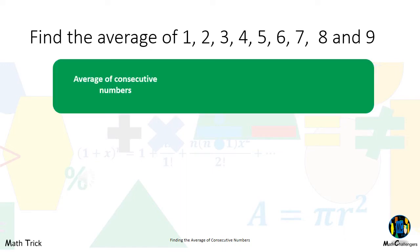To get the average of consecutive numbers, find the sum of the largest number and the smallest number, and divide the sum by 2.